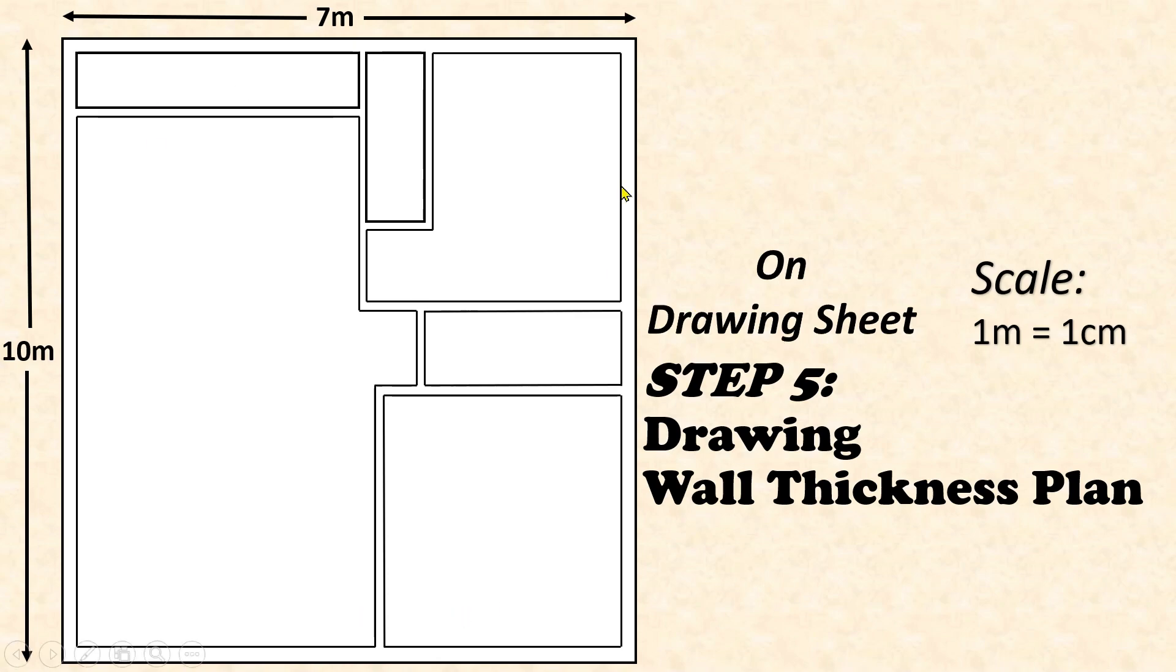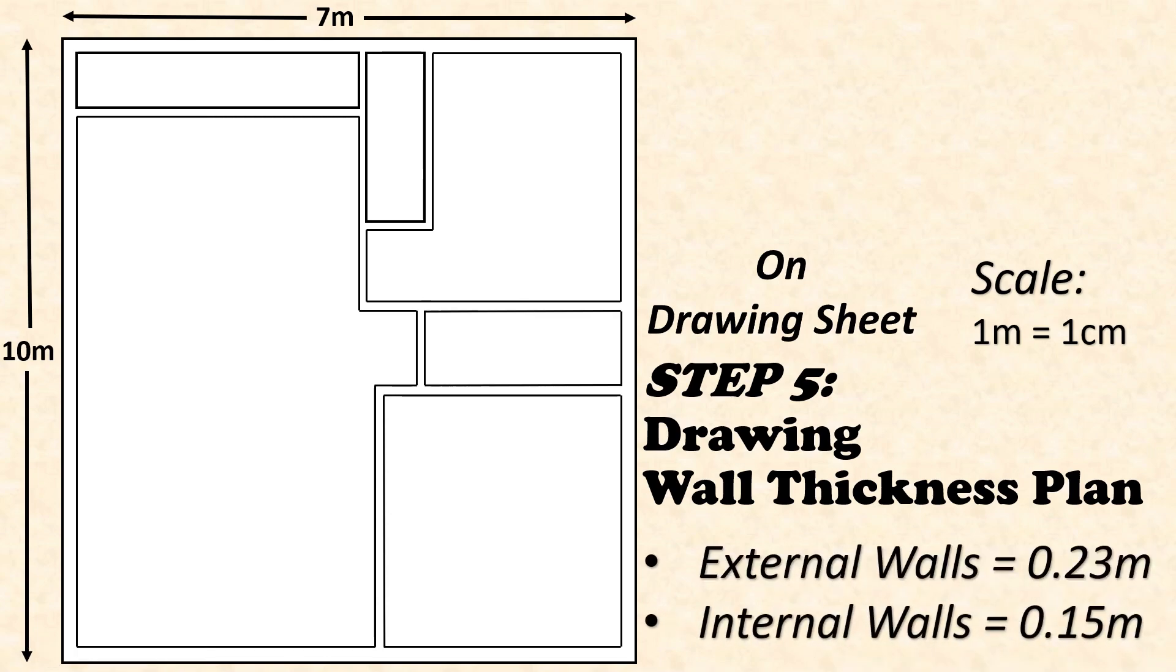The exterior wall thickness should be 0.23 meters and interior wall thickness should be 0.15 meters. This is our wall thickness plan.